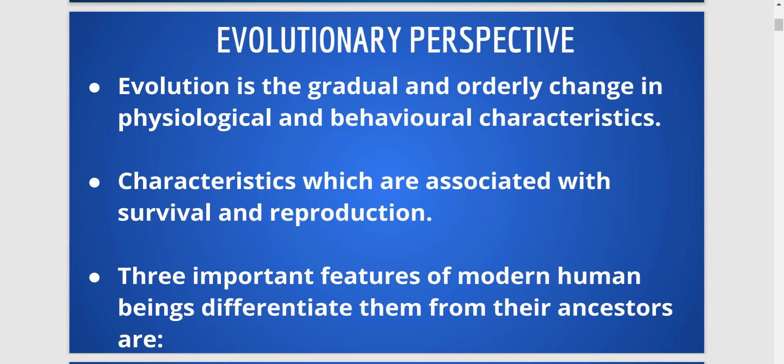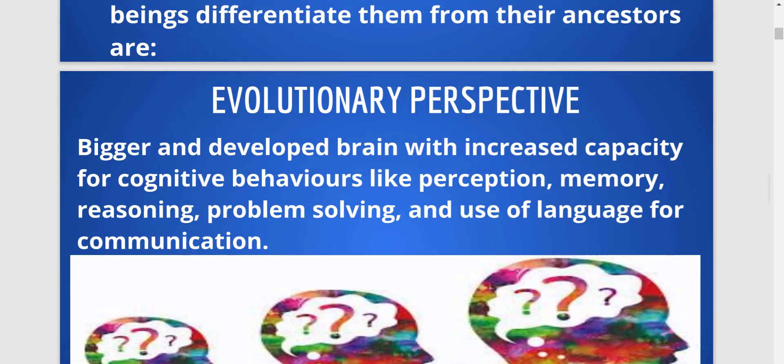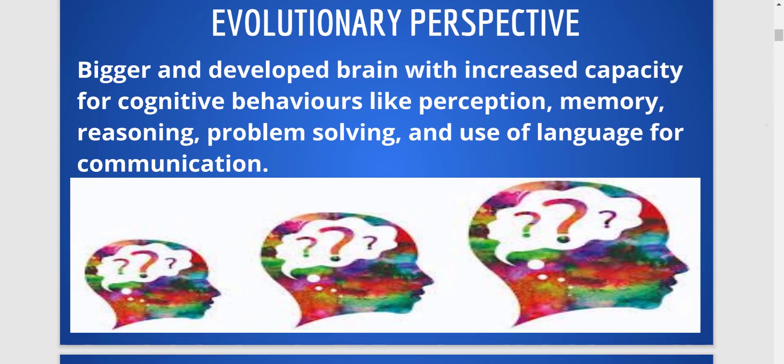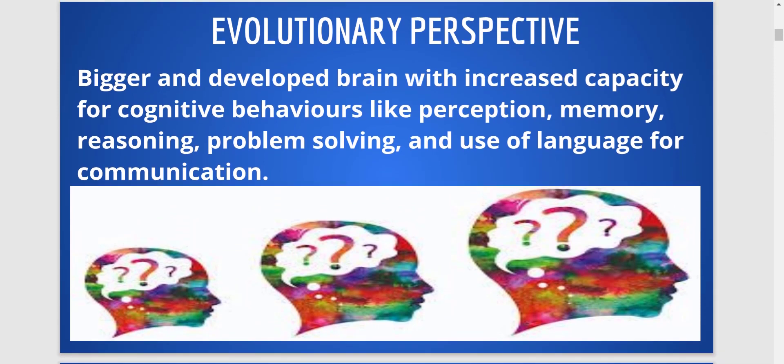There are three important features that tell us that our human species has also evolved. Number one: we have a bigger and more developed brain. Our brain capacities have increased, our cognitive capacities have improved — our way of perceiving things, memorizing, reasoning, problem solving, and use of language. These capacities have improved.